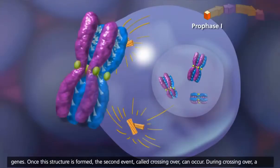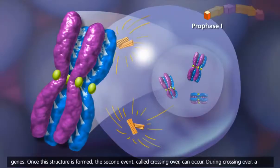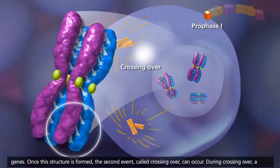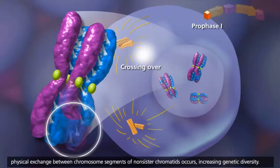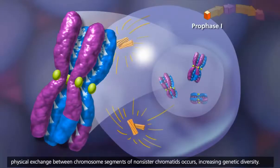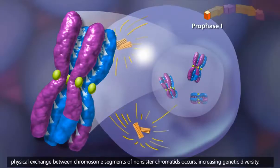Once this structure is formed, the second event, called crossing over, can occur. During crossing over, a physical exchange between chromosome segments of non-sister chromatids occurs, increasing genetic diversity.